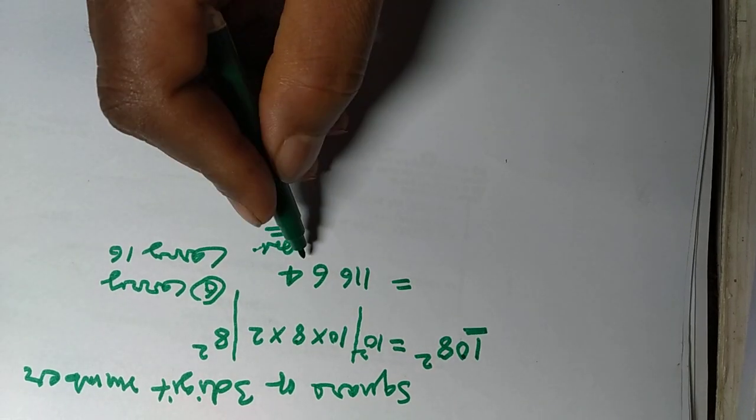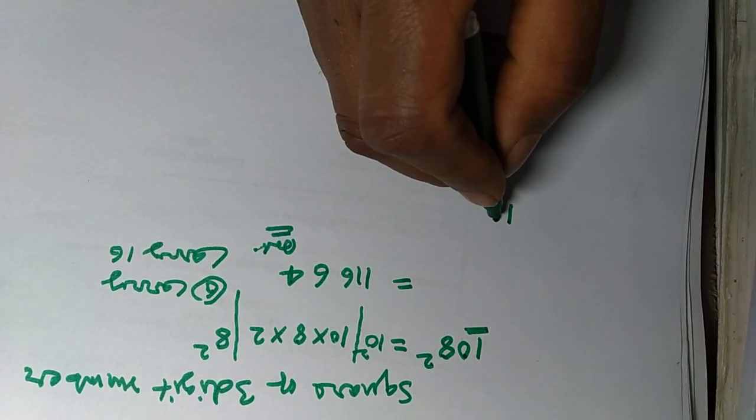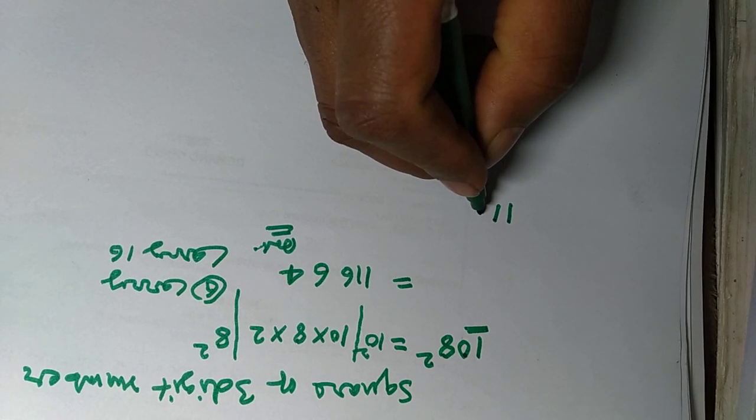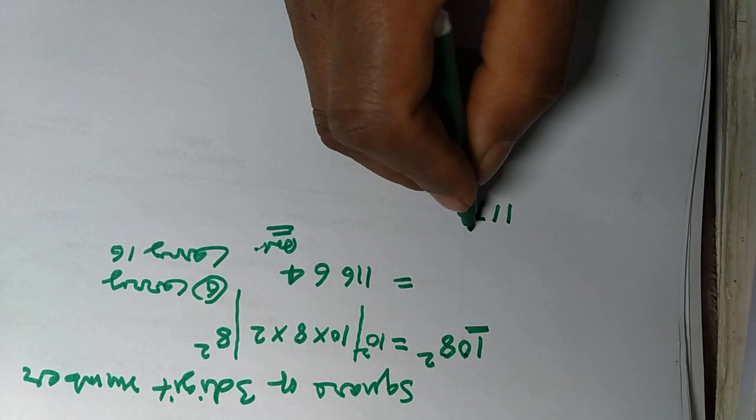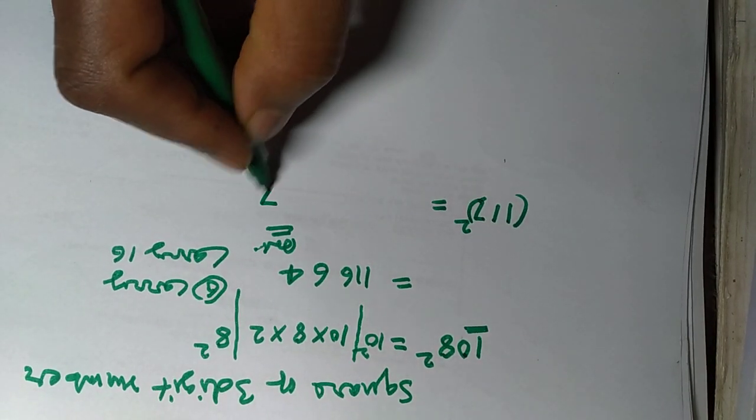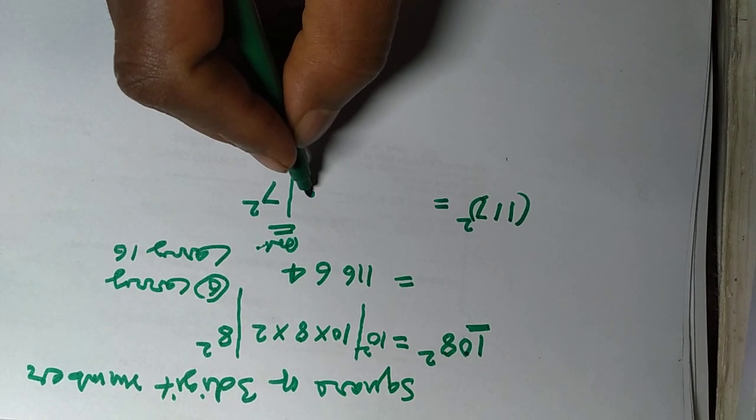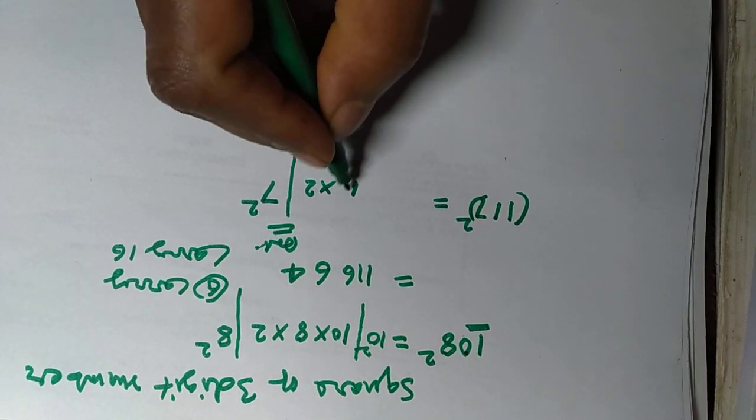This will be the answer. Now take 117 whole square. How can you do it? 7 squared, 2 into 11...